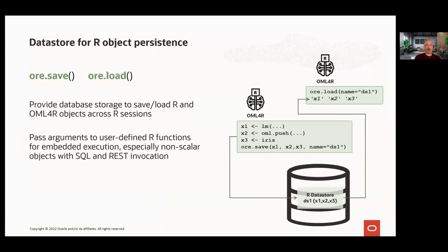The data store for R object persistence is another capability, where you can store R objects in the database rather than flat files. This centralizes objects for a deployed solution, keeps content secure, and takes advantage of database backup and recovery. Using ore.save, users can save R objects including OML4R proxy objects in the database as a named entity, and using ore.load, load them back into R memory across R and database sessions. Data stores are also used for passing non-scalar arguments like machine learning model objects to user-defined functions for use in embedded execution. A data store can contain multiple R objects, making it convenient for passing both scalar and non-scalar objects to user-defined functions.